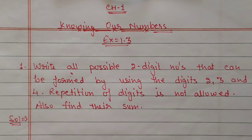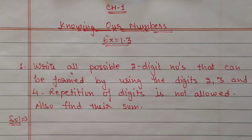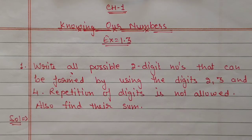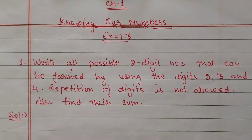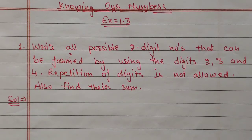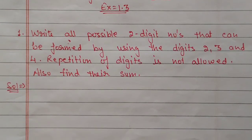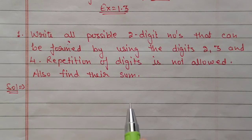Hello students, we are doing Chapter 1, Knowing Our Numbers, Exercise 1.3. In this exercise you will learn formation of numbers by using different digits with repetition and without repetition. First question: write all possible two-digit numbers that can be formed by using digits 2, 3, and 4. Repetition of digits is not allowed. Also find their sum. With the help of 2, 3, and 4 we have to make all possible two-digit numbers, but the condition is that we should not repeat the digits.